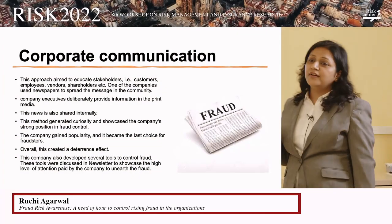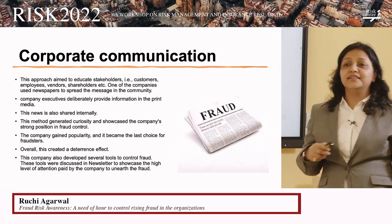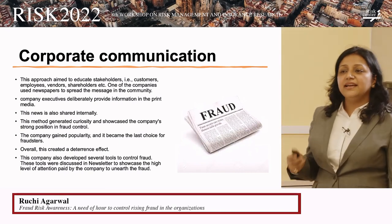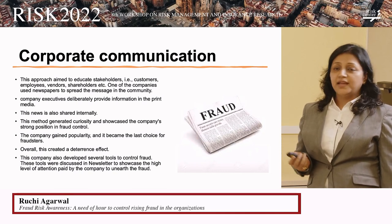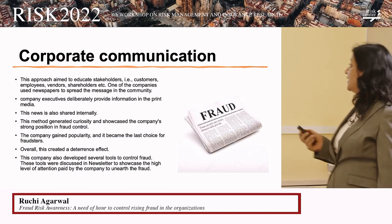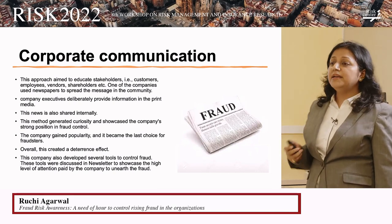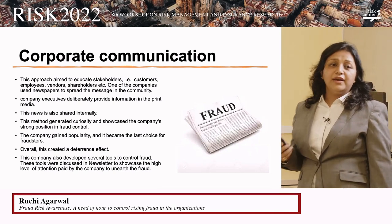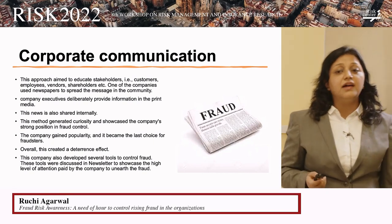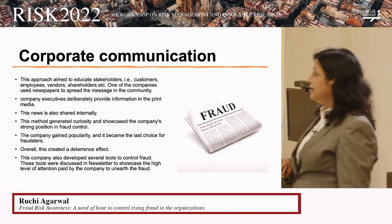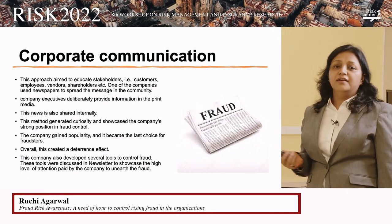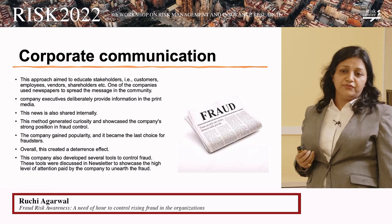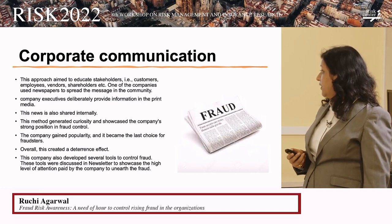The fourth approach is corporate communication. Rather than internal communication, this company focused on external communication — whenever they identified a particular type of fraud, they gave it to the media and news outlets, trying to educate all stakeholders together. For example, dead man insurance: how can a dead person be insured? How does collusion fraud happen? This created a deterrence effect within society and was helpful in the fraud risk awareness initiative.